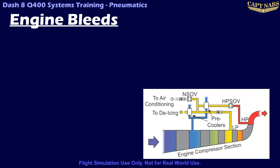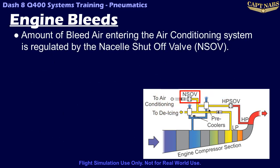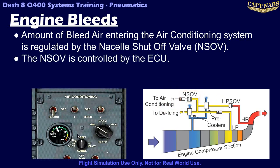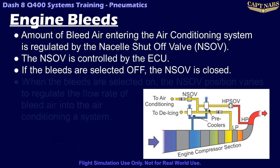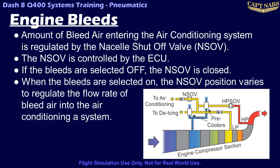The amount of bleed air being allowed to enter the air conditioning system is controlled by a nacelle shutoff valve or NSOV. The nacelle shutoff valve is regulated by the ECU based on system demands and bleed switch positions. When an engine bleed switch is selected off, the nacelle shutoff valve is closed completely. When the bleed switch is turned on, the nacelle shutoff valve opens, and the amount it opens is modulated to regulate the amount of bleed air that enters the cabin. The nacelle shutoff valve is discussed in more depth during the air conditioning module.